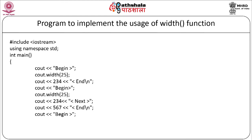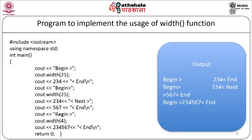When the above program is compiled and executed, it will produce the result: first, begin with blank spaces then 234 and end. Next line: begin with some blank spaces, 234, then 567 without the specified width, then end. The last line: begin, 234567, and end.